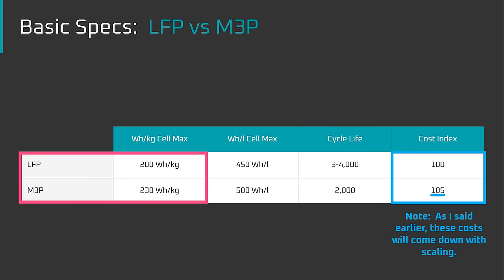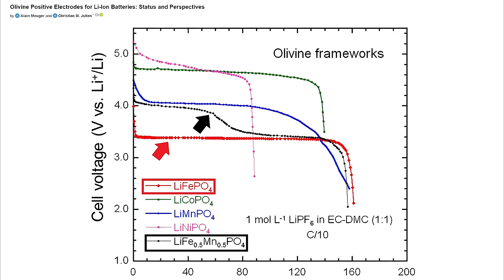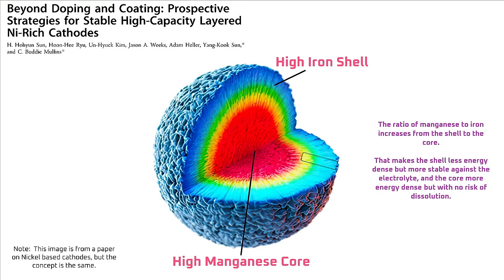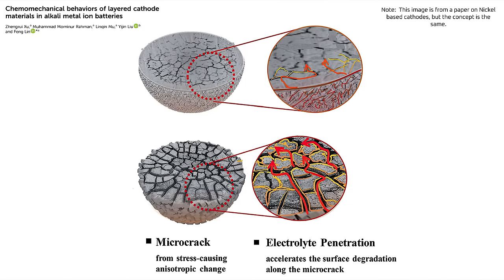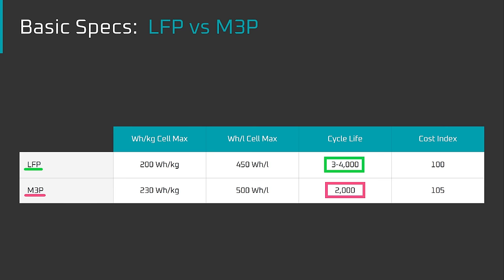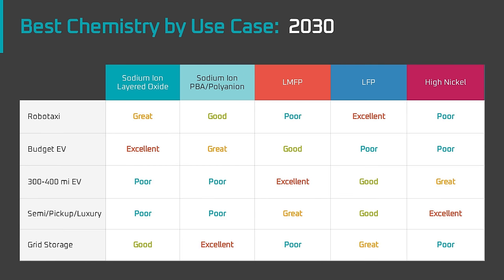Even with the energy density and cost benefits that LMFP batteries have over LFP, my view is that LFP will likely maintain some advantages, such as cycle life. First, LFP batteries operate at lower voltages and in a narrower voltage range, making them more electrochemically stable. Second, some manganese in the concentration gradient cathode particles will likely still dissolve into the electrolyte due to manufacturing imperfections or cycling fractures. If LFP maintains a cycle life advantage, rather than being superseded by LMFP, it'll likely be around for a few more decades, since different use cases require different performance characteristics.